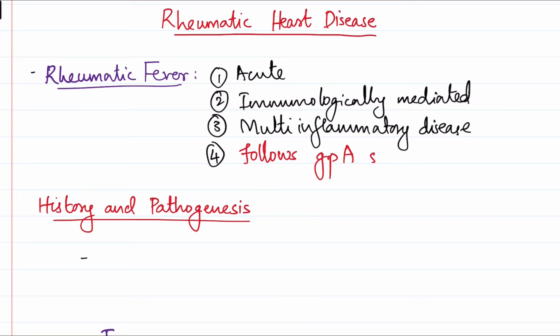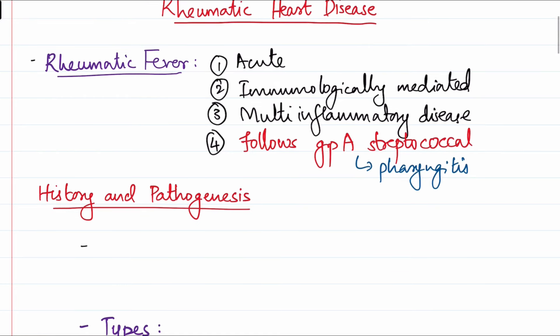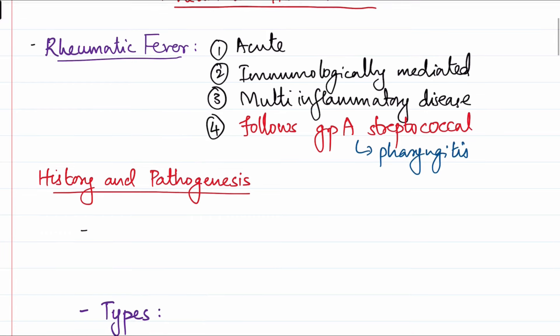The peculiar feature is that it occurs after Group A streptococcal infection — usually manifesting as pharyngitis. So rheumatic fever is an acute disorder that develops a few weeks after streptococcal pharyngitis. Rheumatic heart disease is actually a manifestation and one of the presentations of rheumatic fever. Rheumatic fever may present as acute rheumatic carditis, which may then progress to chronic rheumatic heart disease.